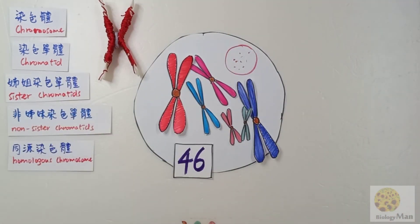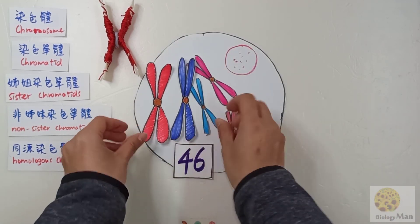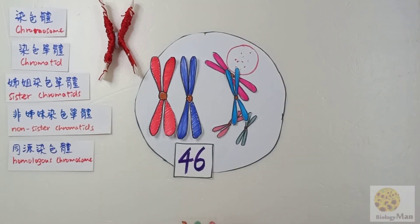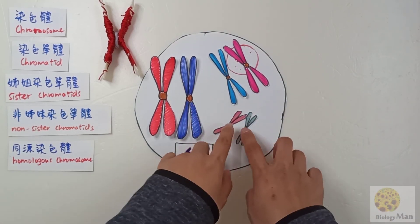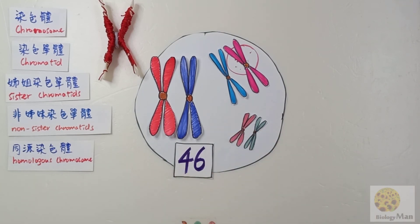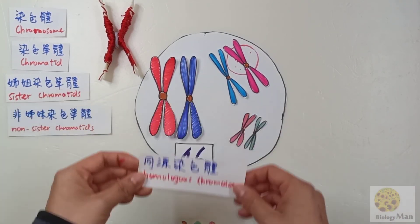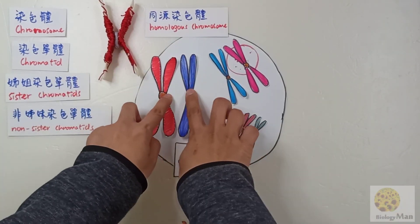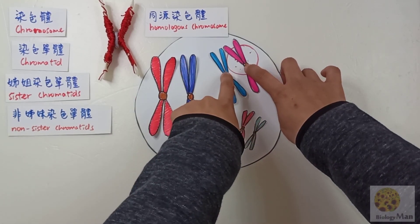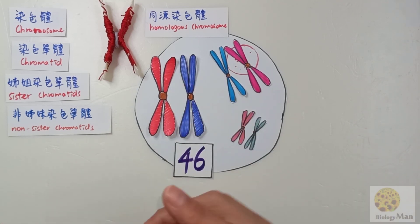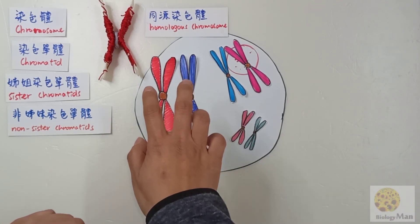After fertilization there will be 46 chromosomes inside the fertilized egg. Some smart students may observe that some chromosomes are very similar — for example, this one and this one are very similar in shape and size. You can also find two other chromosomes whose size and shape are very similar — they just look like a pair. And you are right: they are actually a pair. Here are three pairs of chromosomes and we say they are the homologous chromosomes.